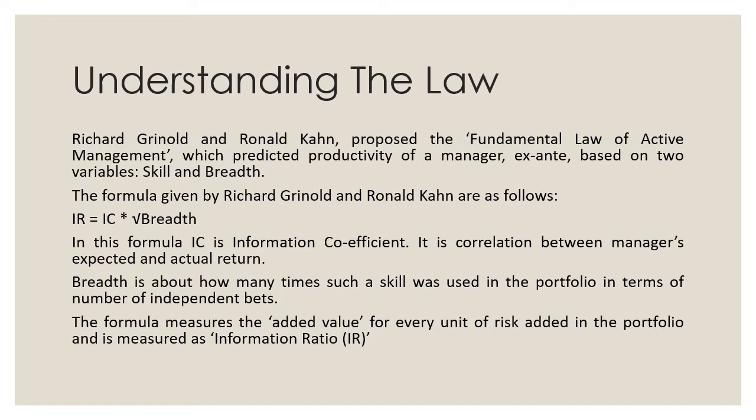This law was proposed by Richard Grinold and Ronald Kahn, and they have basically predicted the productivity of a manager based on two variables: skill and breadth. The formula they have given is as follows — Information Ratio (IR) is equal to IC, which is the Information Coefficient, multiplied by the square root of breadth.